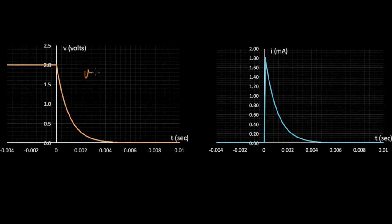This is V of T on this side, equals two e to the minus T over one millisecond. And you can see it starts at two volts and then sags down as we predicted. And that's an exponential curve.